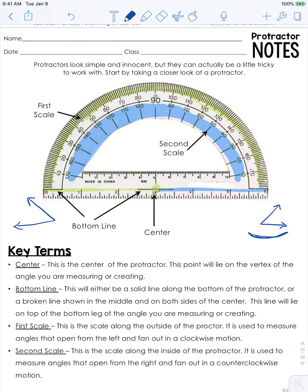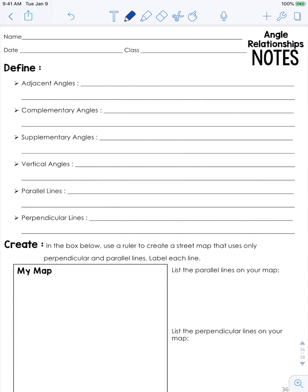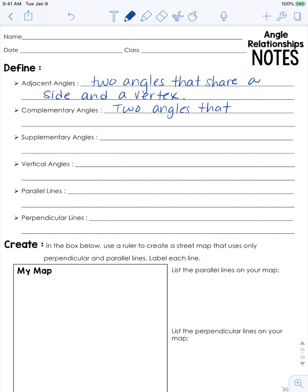Now that we've had a look at the protractor, we're going to talk about actual angle relationships. Adjacent angles are two angles that share a side and a vertex — basically they are right next to each other. Complementary angles are two angles that add up to 90 degrees. A way to remember this is: to give a complement is the right thing to do, and 90 degrees is a right angle.